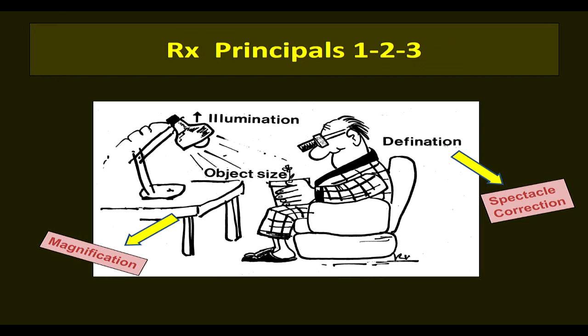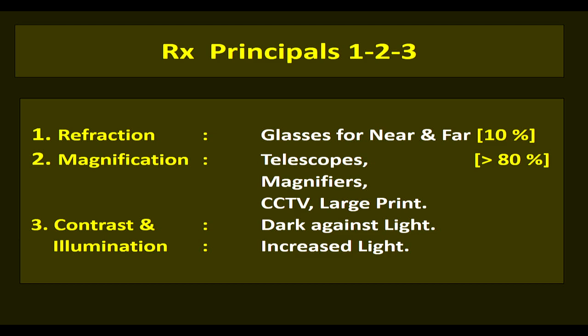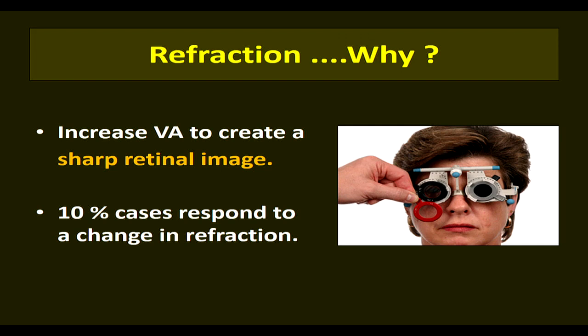To increase vision in a low vision patient: first, increase definition or sharpness of the image by refraction and spectacle correction; second, by increasing illumination; and third, by increasing the size of the object, either physically or by prescribing magnifiers. Many conditions that cause low vision are progressive and unpredictable, so there may be frequent changes in glasses. People with visual impairment are also more prone to falling, so we can use CR-39 or polycarbonate glasses. Only 10% of low vision patients get satisfactory retinal image by refractive glasses alone.